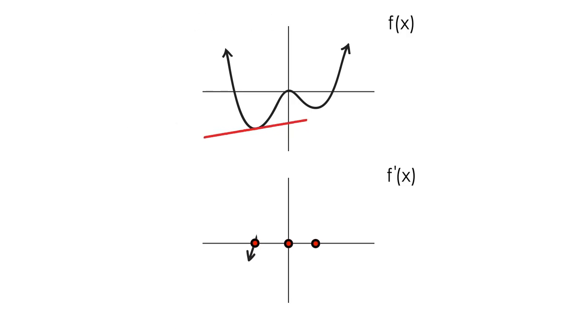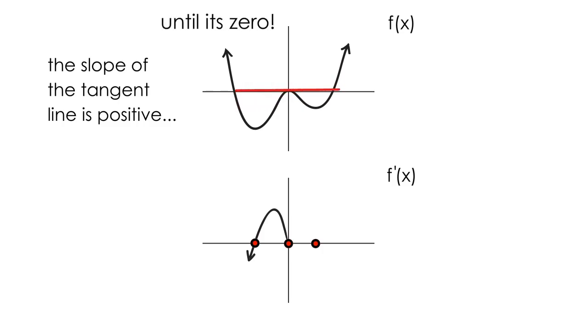As we continue moving our tangent line along our curve, we see that our slope becomes positive, which we reflect on the graph of our derivative by drawing it above the x-axis, as this is where positive y values live. The slope is positive right up until the point where it becomes zero.